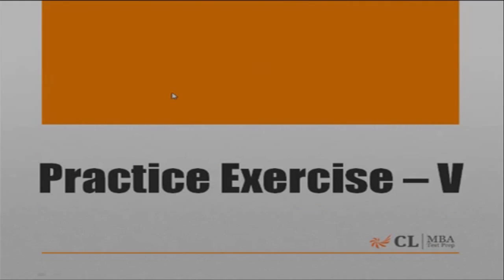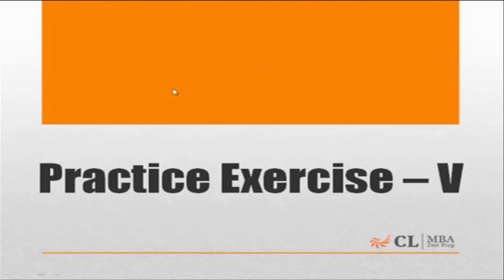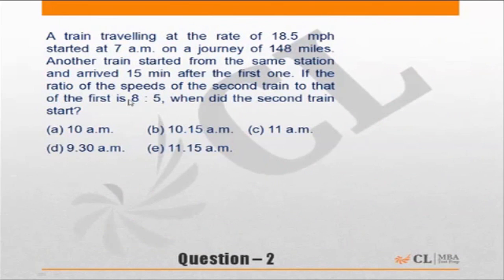Practice exercise 5: Time, Speed, Distance. Let's go to the question of this exercise. Question 2: A train traveling at the rate of 18.5 miles per hour started at 7 AM on a journey